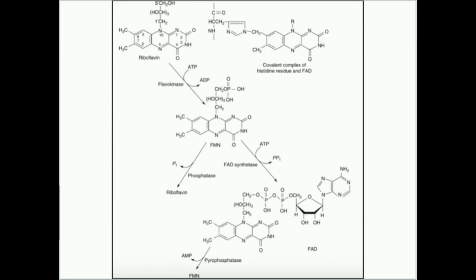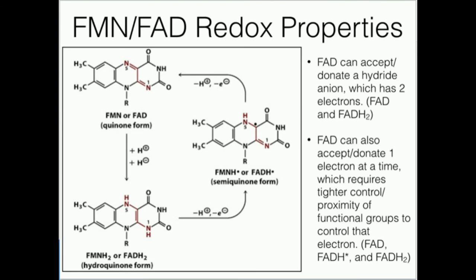So in the intestines we go from FAD to FMN to riboflavin, and in our cells we go from riboflavin to FMN to FAD — we just reverse the process once we get it into the cells. If you eat plenty of meat, there's no real way you're going to be deficient in riboflavin, because we can take that FAD and FMN, break it down to riboflavin, and absorb it.